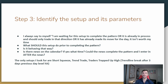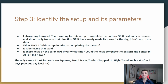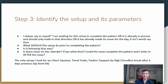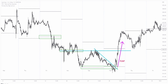Step three: identifying trade setups and their parameters. You should always be saying to yourself, 'I'm waiting for the setup to complete the pattern,' or 'the trade setup has already completed the pattern and it's moving in the direction that it should, and I only want to trade in that direction.' Is there news on the calendar? If yes, what time is the news — could the news be the thing that completes the pattern and you should just enter after the news? The only trade setups I'm looking for are short squeezes, trend trades, or three days of movement in one direction where they break a trend line, trap up high, and then dump it in a different direction — or in reverse, they dump the market, trend line break, trap down low, and then shift the market in the opposite direction.